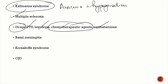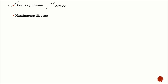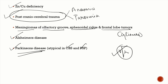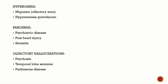Kallmann syndrome presents with anosmia along with hypogonadism. Other causes include multiple sclerosis, and drugs such as propylthiouracil, levodopa, chemotherapeutic agents, and antihistamines. Basal meningitis — for example from tuberculosis — Korsakoff syndrome, prion diseases like Creutzfeldt-Jakob disease, chromosomal disorders like Down syndrome and Turner syndrome, and Huntington's disease are also causes. Key causes not to forget: common cold/URTI, presbyosmia, head injury, orbitofrontal tumors, and neurodegenerative disorders.